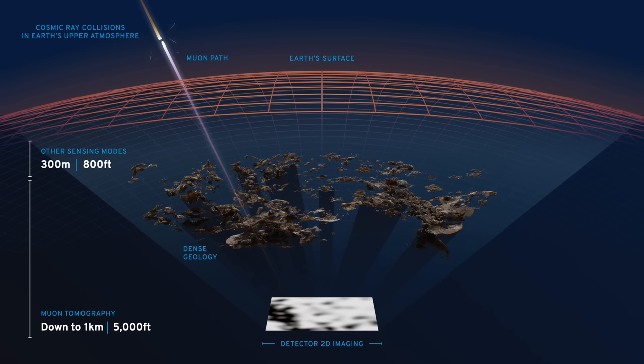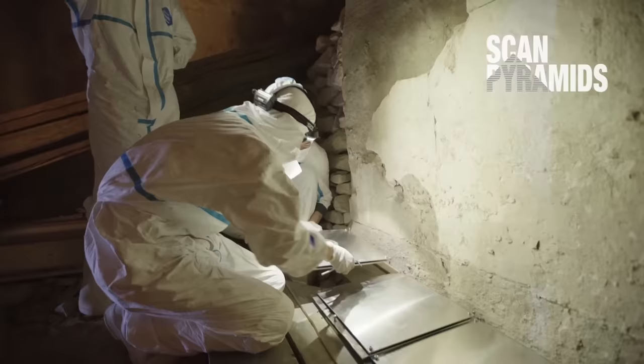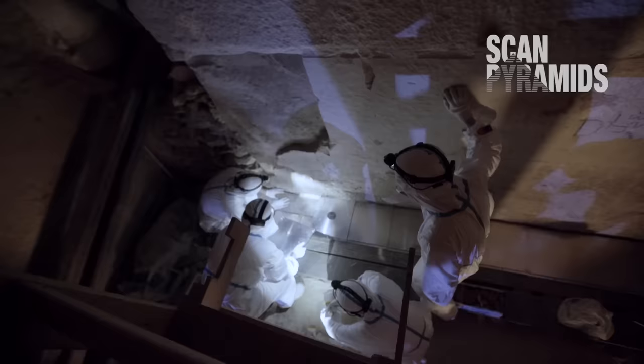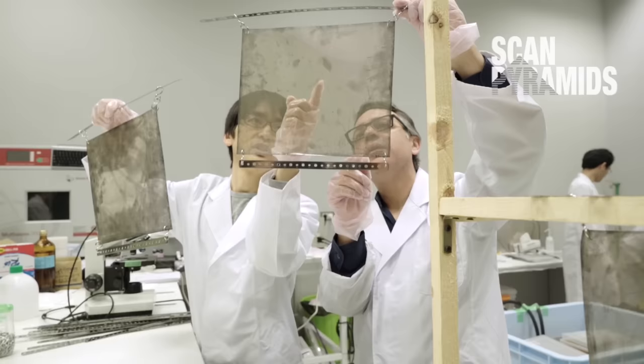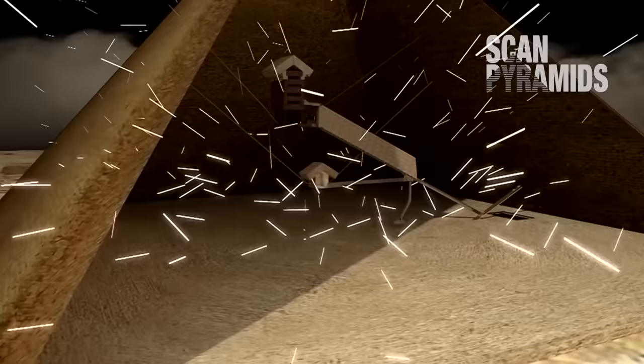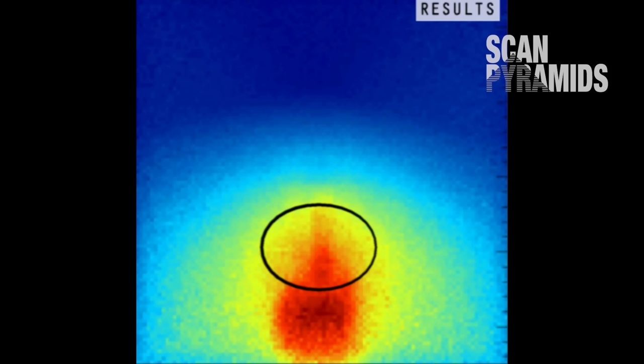Muon imaging works a bit like an X-ray. Muon detectors, known as nuclear emulsion films, are placed underneath or inside structures to capture the muons that pass through it. In the resulting image, high-density areas such as the core masonry of the Great Pyramid will show up as dark patches, because a lot of muons get absorbed by the masonry, whilst others are deflected away. Basically, less muons will reach the detectors. But empty spaces like corridors and chambers will show up as bright patches, as muons can pass through easily, and so more of them can reach the detectors.